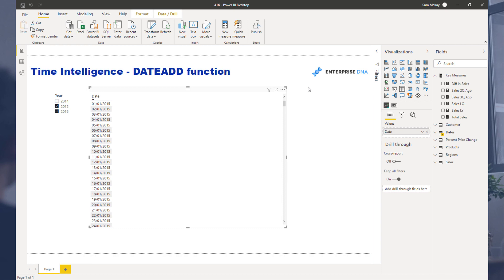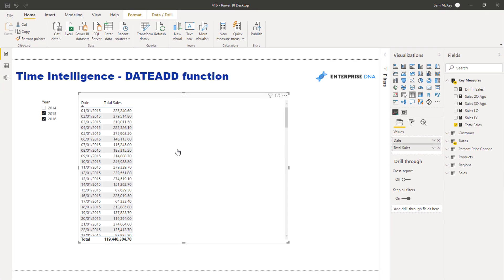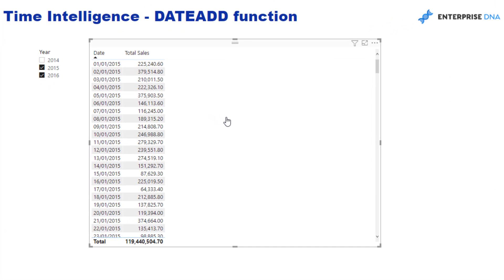Once you understand how to use it, I'm going to build up a really simple table of information to begin with. Remember, time intelligence is a subset of functions within the DAX formula language that you can utilize to run very time-specific analysis. I'm going to show you how you can do a lot of that analysis very quickly with just this one function.